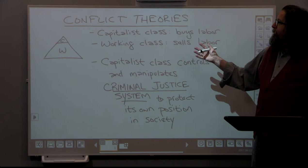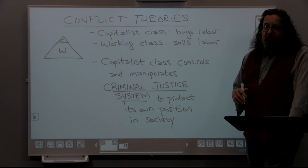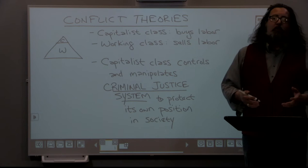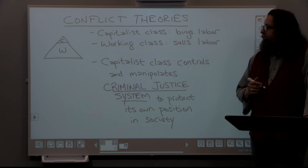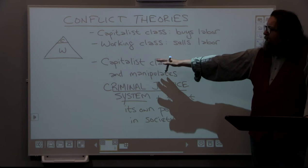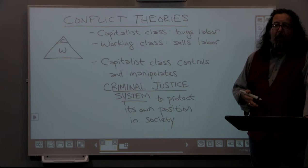From a conflict theory point of view, in regard to deviance, what we can say is the capitalist class controls and manipulates the criminal justice system to protect their own position in society. When we talk about the criminal justice system and break it down into its components — law enforcement, the judicial system, and corrections — we can say those are three big elements, and we look at who makes the rules and who is in control of those three different elements.